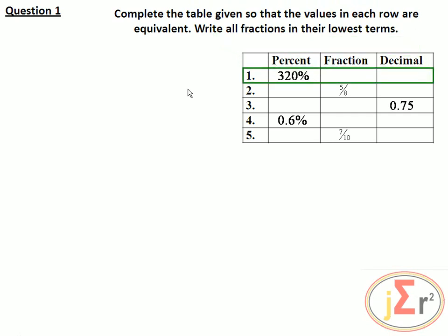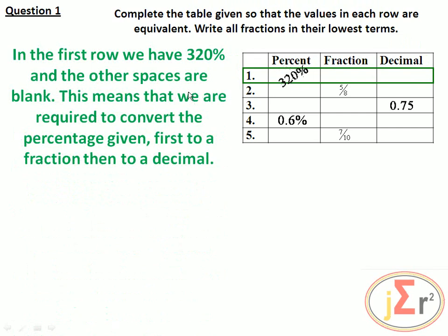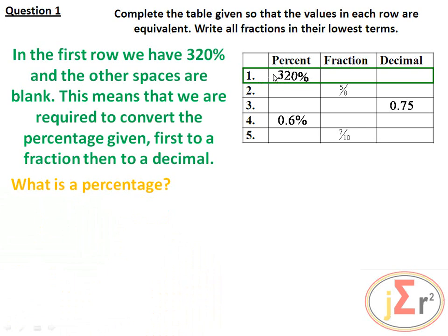Looking at the first row, we have 320% and the other spaces are blank. This means we are required to convert the percentage first to a fraction, then to a decimal fraction. Before we do that, we will take a look at the specific details that have to do with percentages.